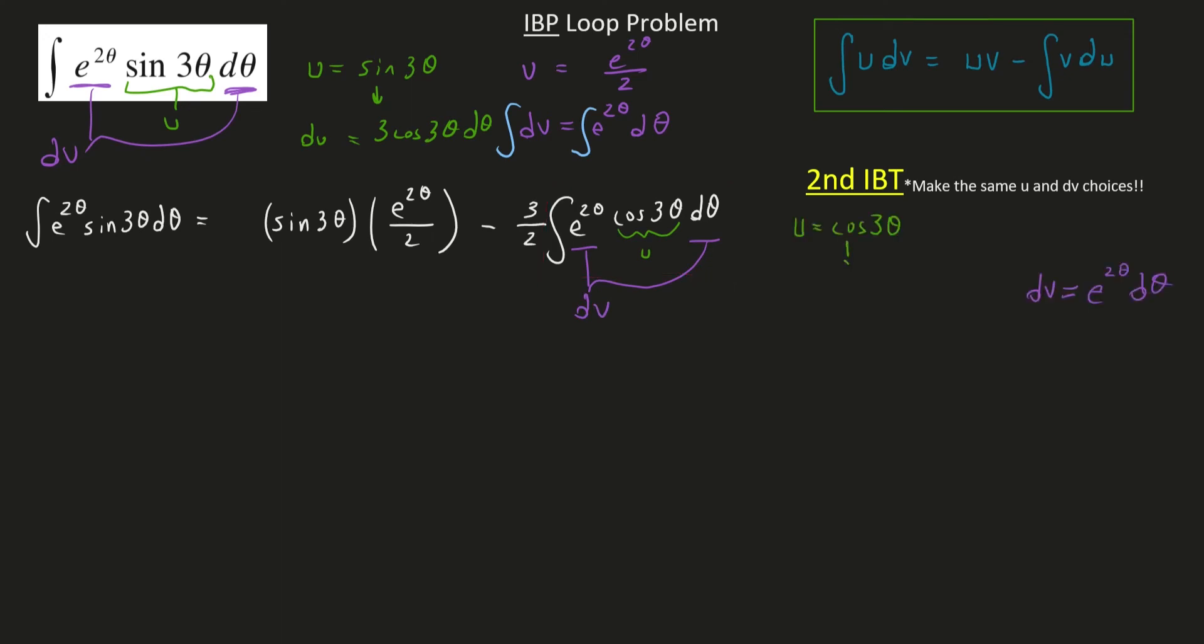So my derivative of my u will be negative 3 sine of 3 theta. Of course, I'll multiply both sides by d theta to get du by itself. Do my anti-derivative of my dv side, and I'll end up with v will equal e to the 2 theta over 2.